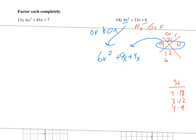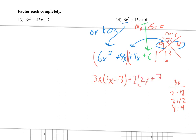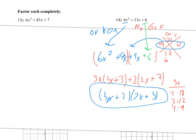We're going to split the middle term: 9x plus 4x — order doesn't matter — then put the 6 out back. Now do our grouping: group the first two terms, group the last two. Take the GCF out of the first group, which is 3x, leaving (2x + 3). From the second group, take out a 2, leaving (2x + 3). Then we can factor as (3x + 2)(2x + 3). You can always do a FOIL to check.